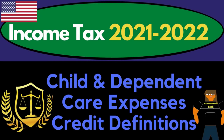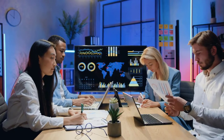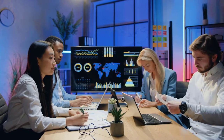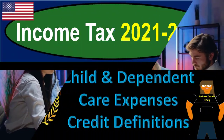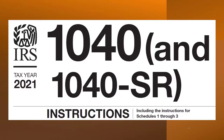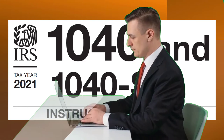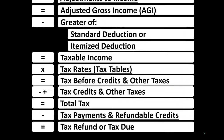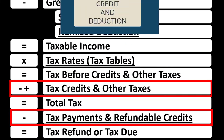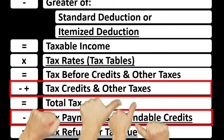Income Tax 2021-2022 Child and Dependent Care Expenses Credit Definitions. Get ready to get refunds to the max, diving into Income Tax 2021-2022. Most of this information can be found in the Form 1040 Tax Year 2021 Instructions on the IRS website, irs.gov, in the income tax formula down in the credit area.